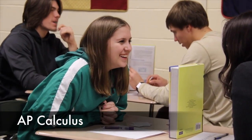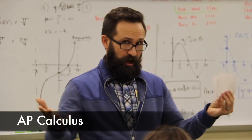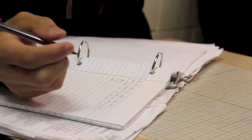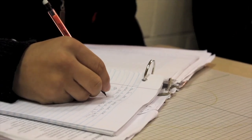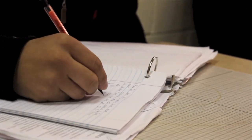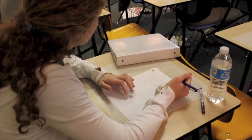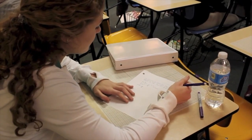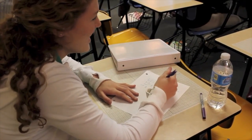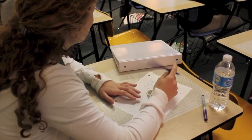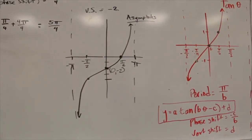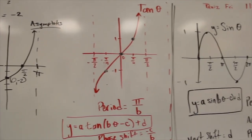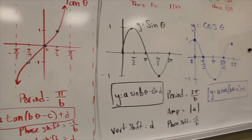AP Calculus AB is a rigorous course for those seniors who have successfully completed three years of mathematics and who are willing to give the time and effort necessary to study calculus. The material covered in this course includes functions, limits, derivatives of algebraic and trigonometric functions, integration, applications of differentiation and integration, methods of integration, advanced topics in analytic geometry, and differential equations.